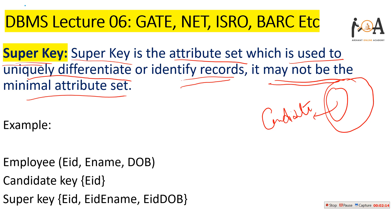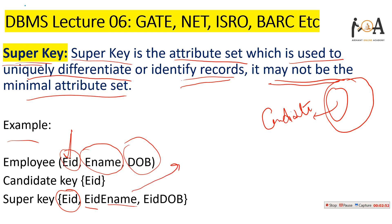Let's see an example. Employee data is given with attributes: employee ID (EID), employee name (ENAME), and date of birth (DOB). The candidate key is EID — it is the minimal attribute set which differentiates records. But if I add EID with ENAME, it also uniquely differentiates records. Similarly, EID with DOB also uniquely differentiates records, even though ENAME is not required. Such combinations are called super keys.